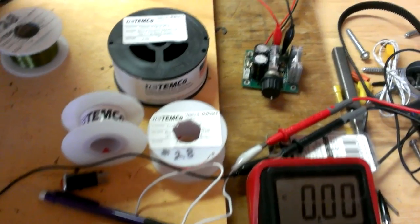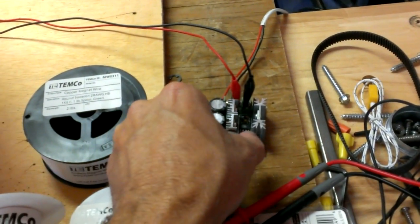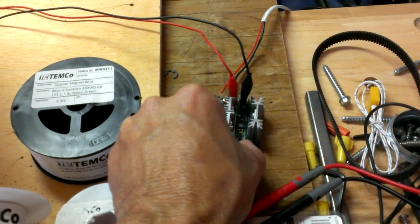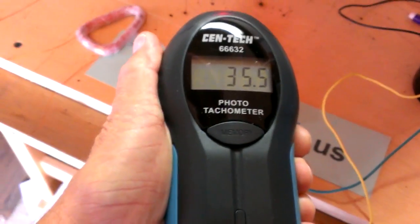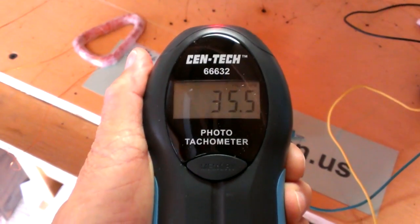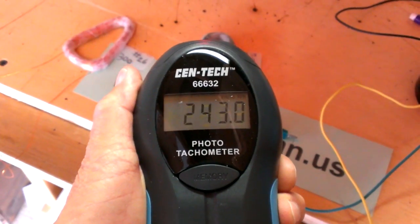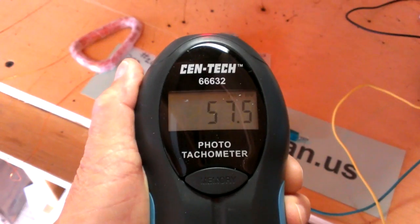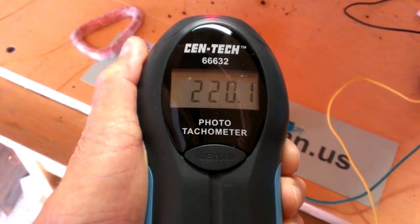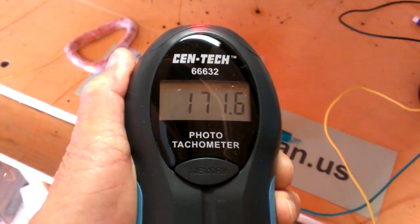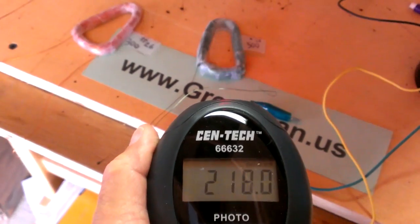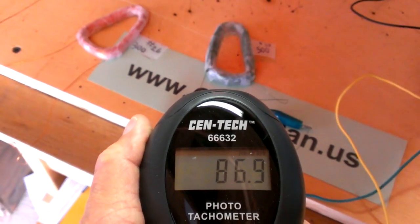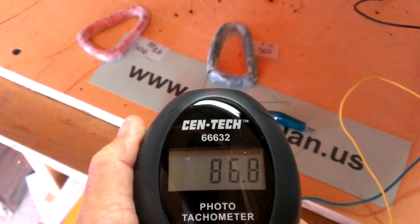Now I'm going to use this pulse width modulator to speed it up a little bit. See if I can get a reading on my tachometer here. It's got to settle in. There we go, about 87 rpm.